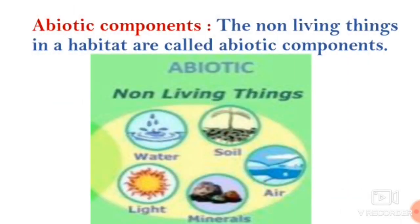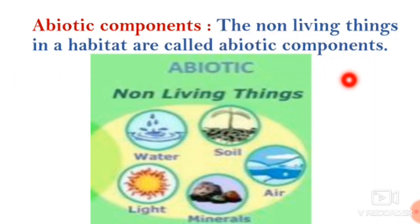What about abiotic components? Biotic means living things. Abiotic means non-living things. The non-living things in a habitat are called abiotic components. See — water, soil, air, minerals, light. These non-living things in a habitat are called abiotic components.